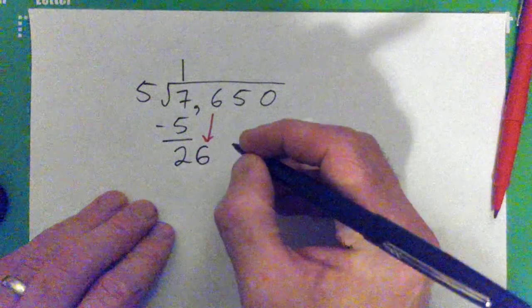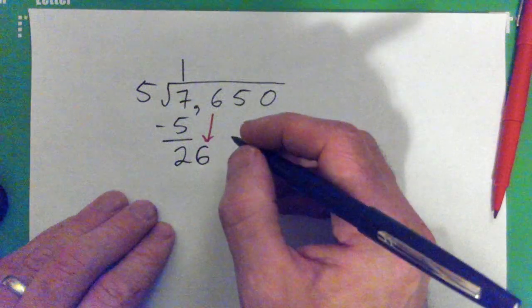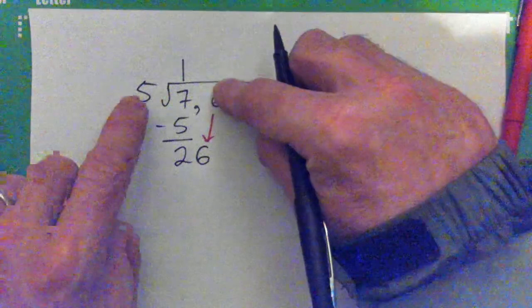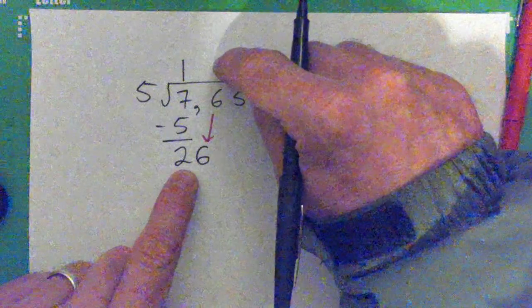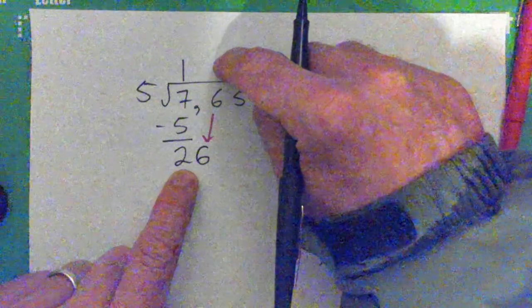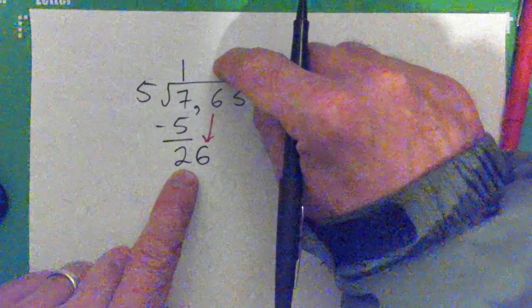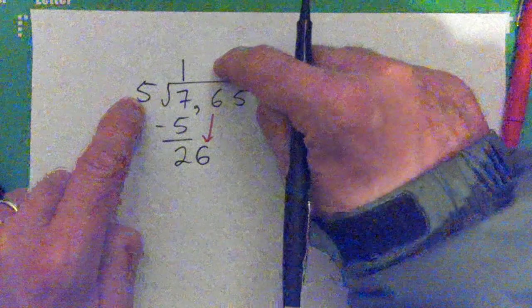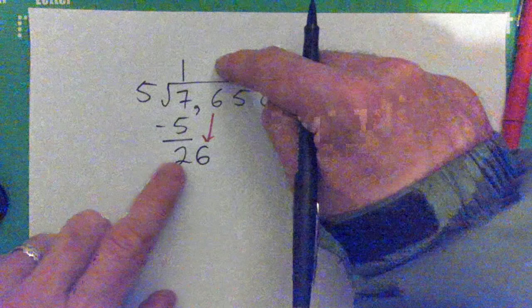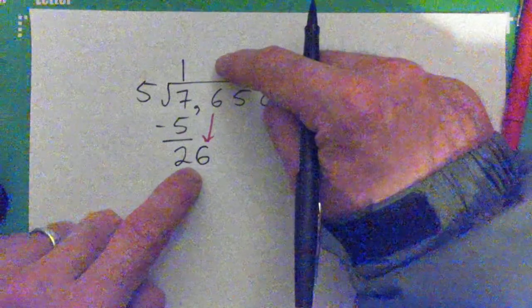So two six, got that. Now this number into this number, write it up here. You're kind of dividing, you're going like how many fives are contained inside of 26. Five goes into 26 how many times?